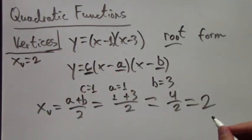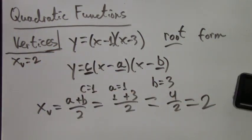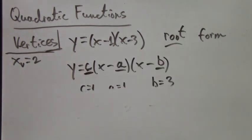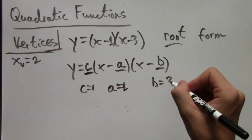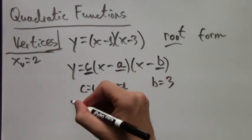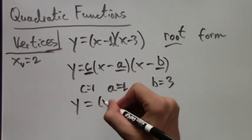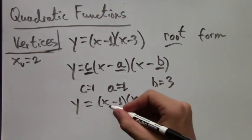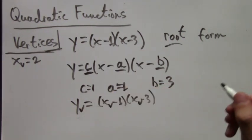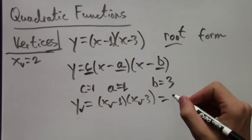And don't get confused. We're still using the letters a and b, but they mean different things in standard form and in root form. So, when we have it in root form like this, we do a plus b over 2. But if you have standard form, look at the other formula earlier in the video.